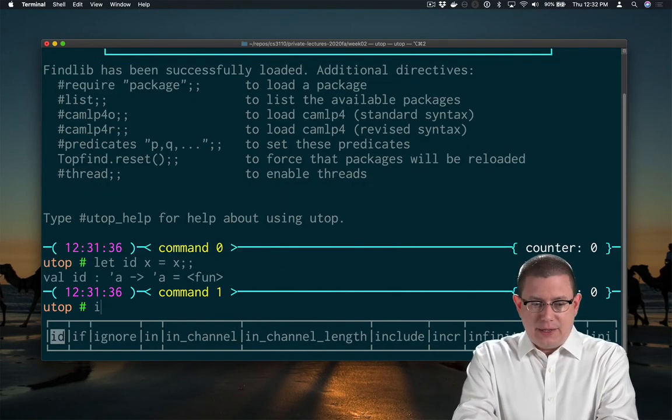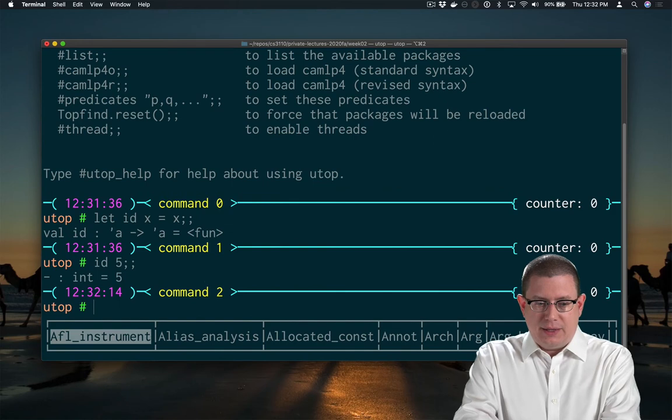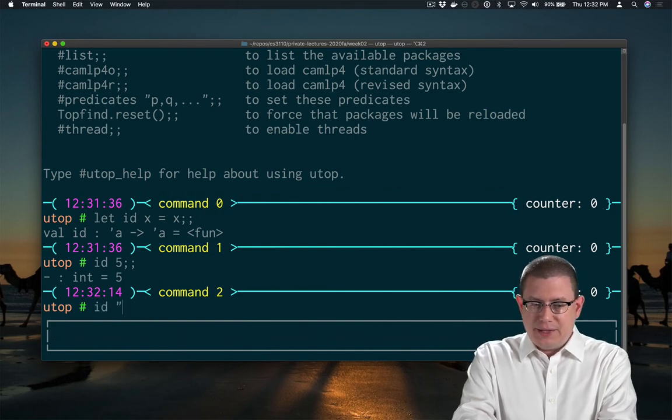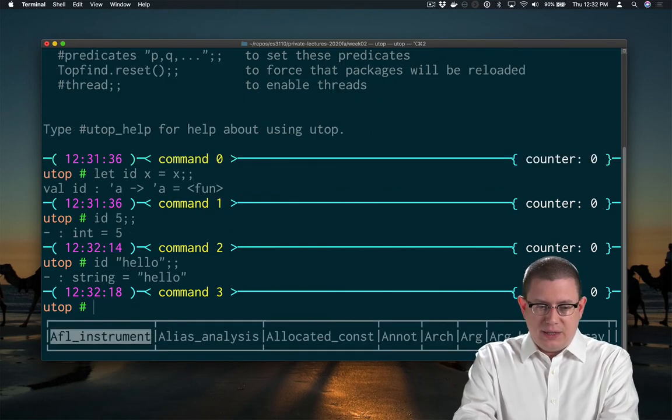So if I pass 5 to id, I get 5. If I pass hello to id, I get hello.